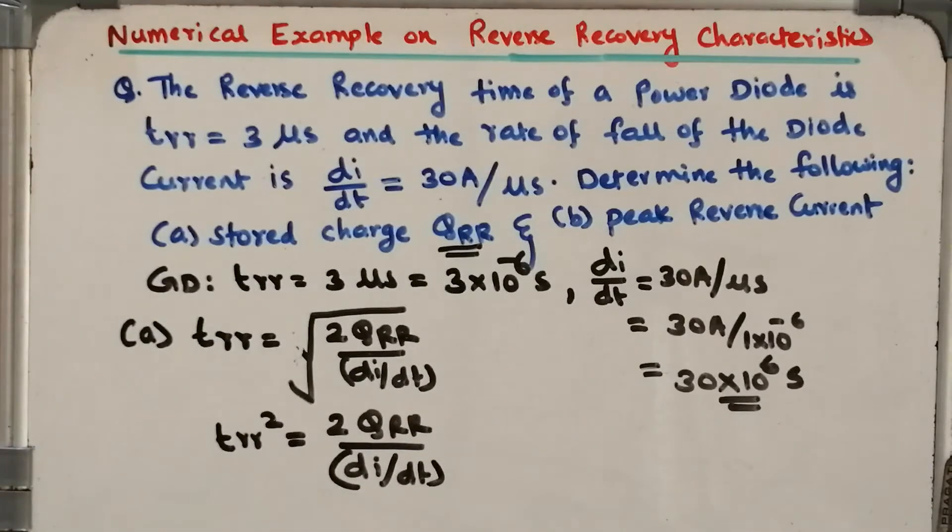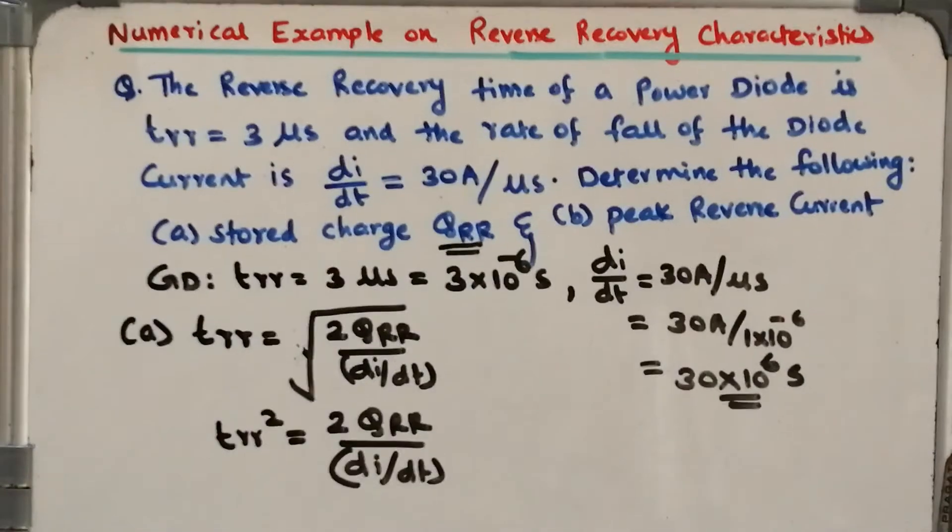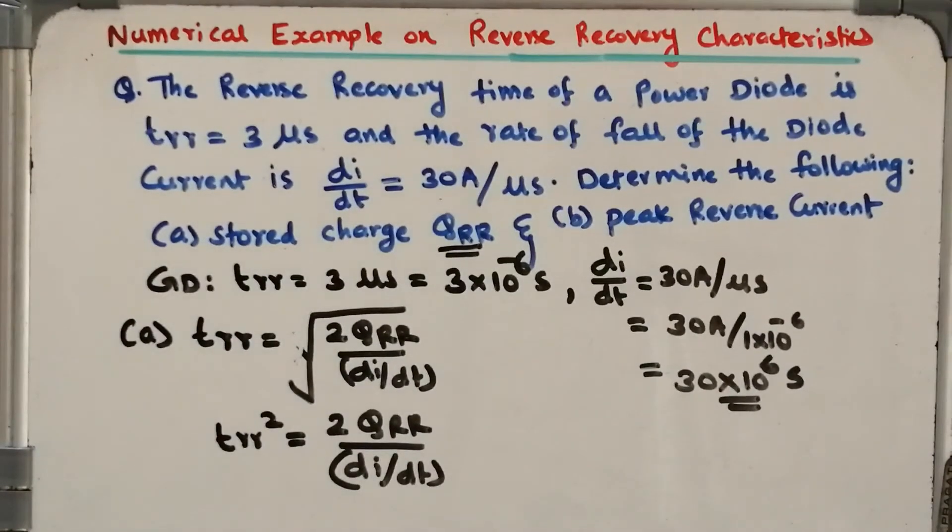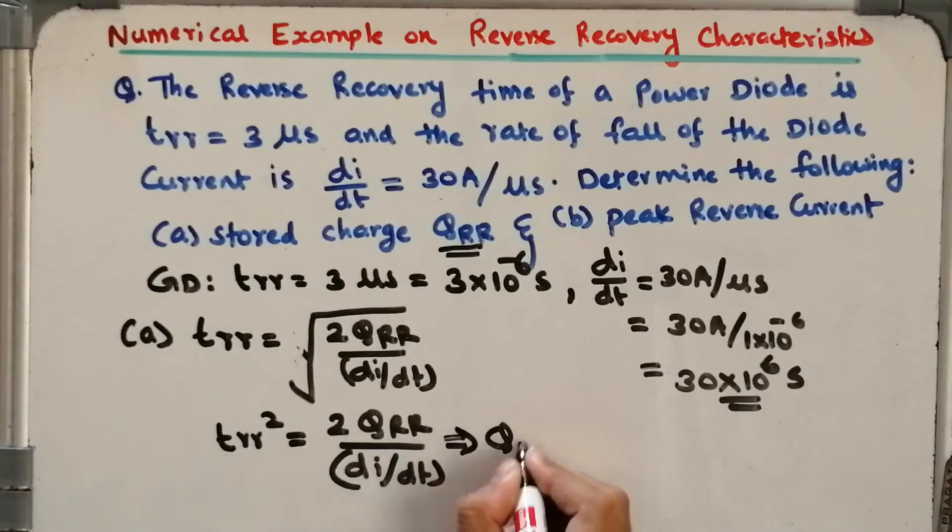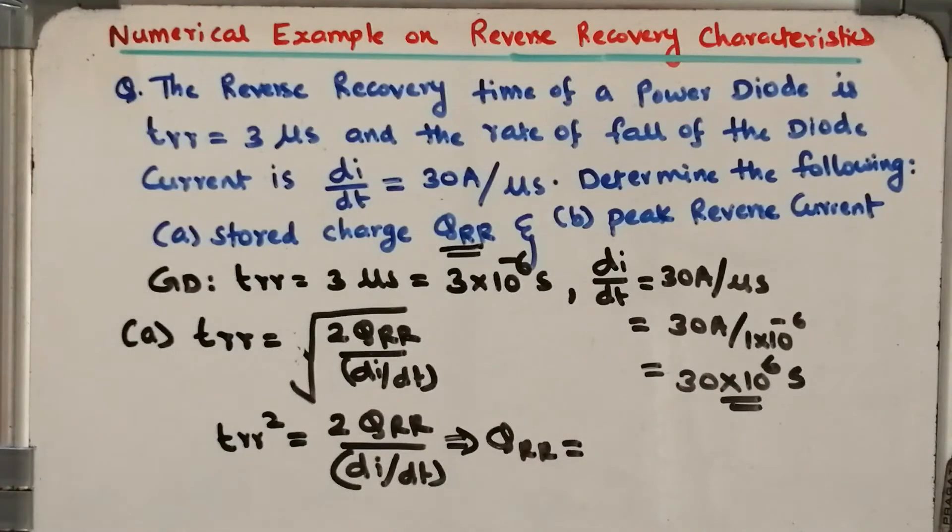From this I can calculate the value of QRR. Therefore QRR equals, let me write QRR keeping it on one side, then half times TRR squared times dI/dt.